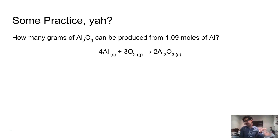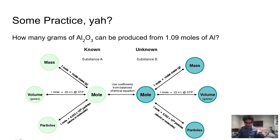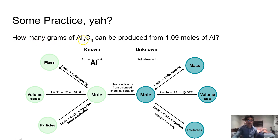We have a problem — a very standard stoichiometry problem. How many grams of aluminum oxide can be produced from 1.09 moles of aluminum? Here's a balanced equation to go along. Let's bust out that mole roadmap. The first thing I'm going to do is figure out what is the known substance and what is the unknown substance. I'm told 1.09 moles of Al, so aluminum is my known, and I'm asked about aluminum oxide — how many grams of aluminum oxide — so that is going to be my unknown.